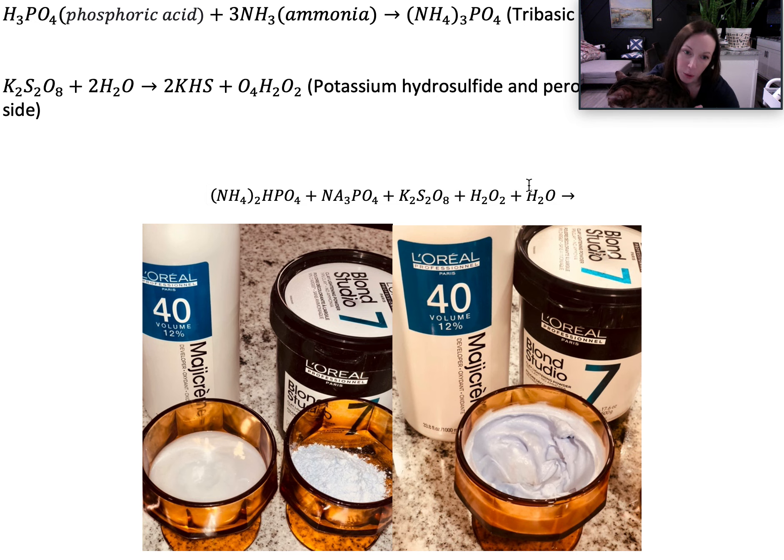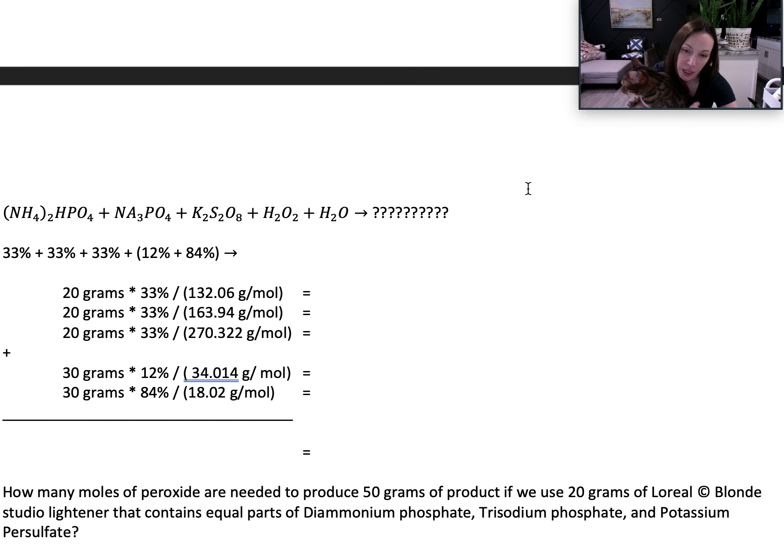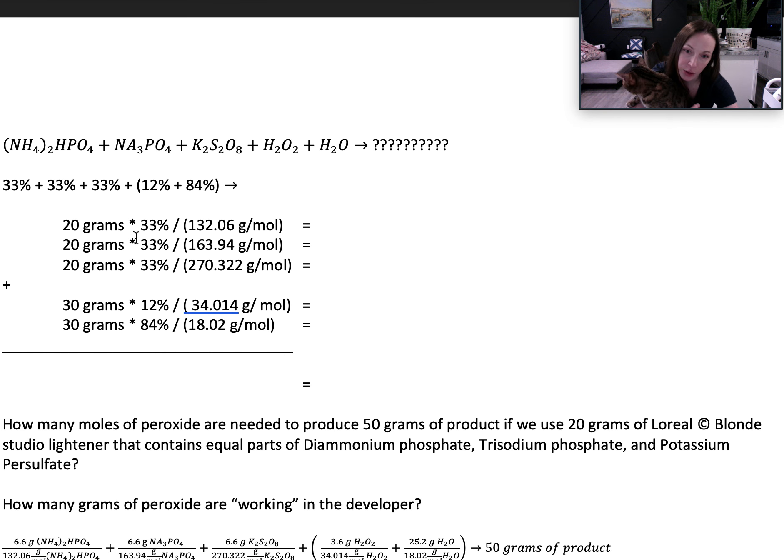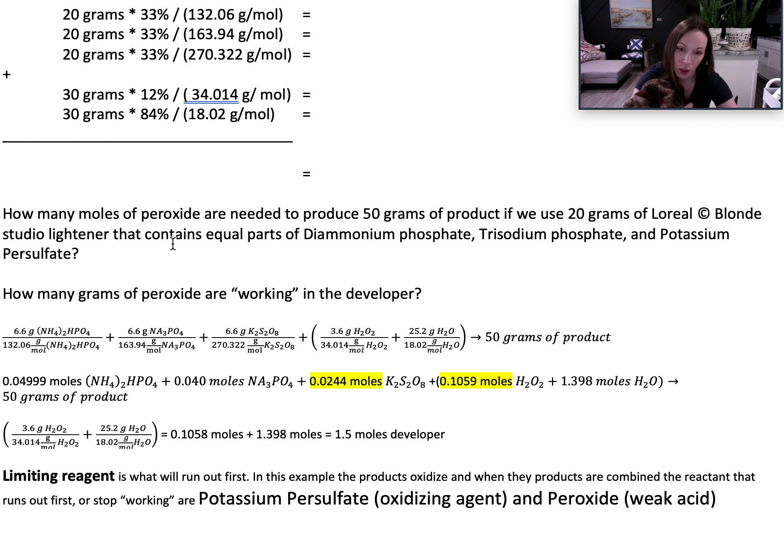we determined that at 20 grams at 33% ratio, assuming that each one equals one mole, we have our limiting reagent as potassium persulfate,